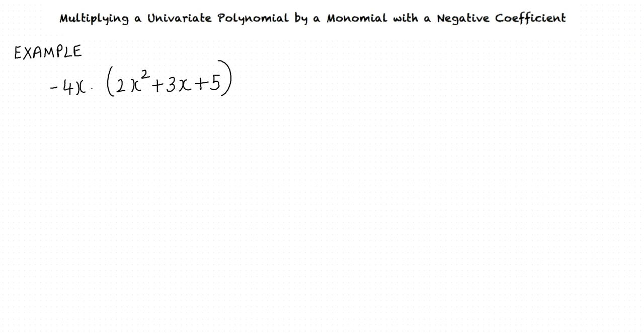Let us say we have to evaluate negative 4x times 2x square plus 3x plus 5. Okay, we have the same variable in the monomial as well as the polynomial, right? Good observation. That is right. We apply the distributive law to compute the product.